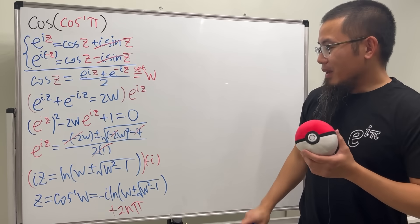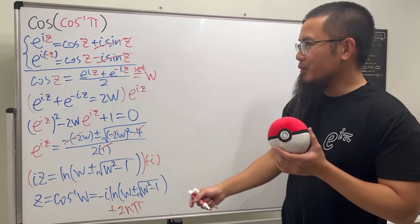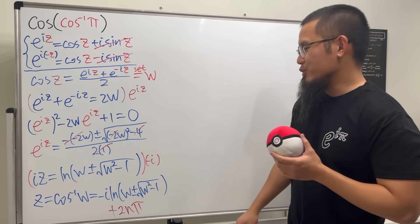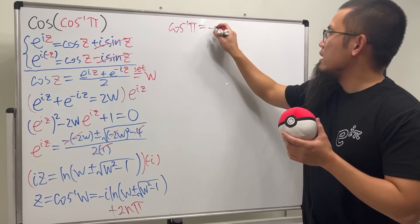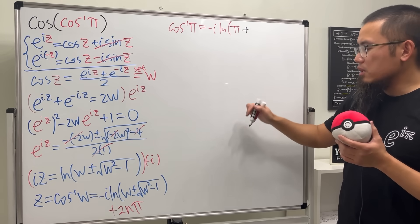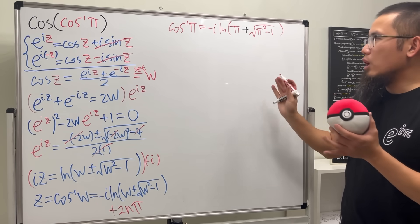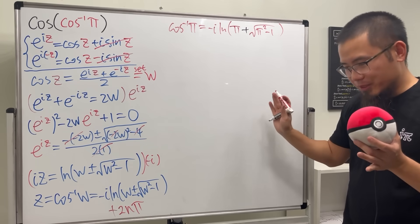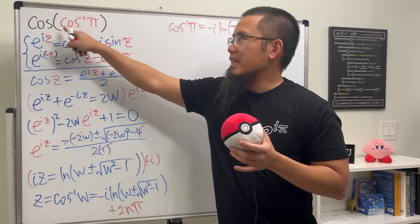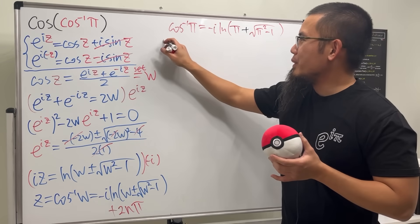Now to calculate arccos(π), all we have to do is put π in for w. I'm going to work out just one solution. Using the plus version, we have arccos(π) equals negative i times the natural log of π plus the square root of π squared minus 1. That's what we need. Now we still have to compute cosine of this expression, so here we go.